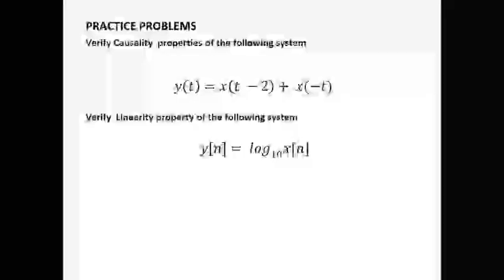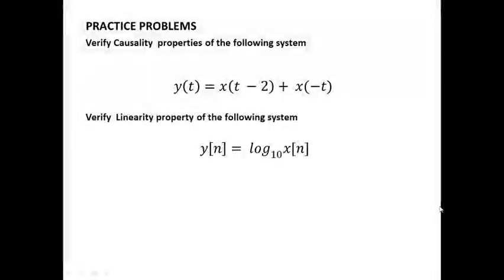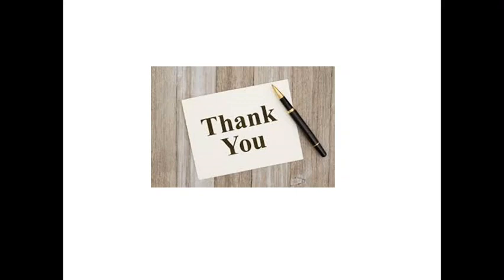In this class we have discussed the causality property and linearity property for both continuous as well as discrete time systems. Please apply your knowledge to the given practice problems: verify causality and linearity. Next class, we will be studying about the remaining properties — time variance, stability, and memory property of systems. Thank you.